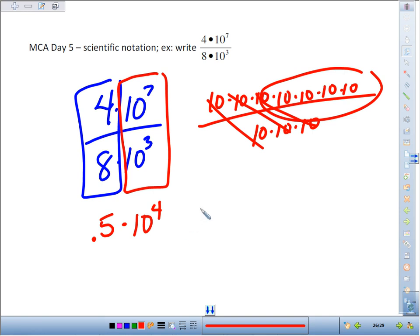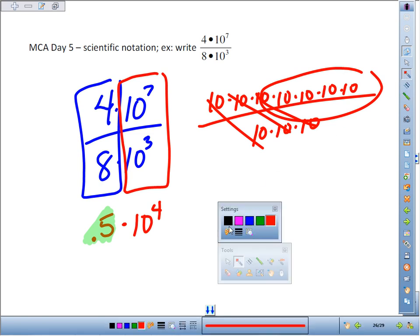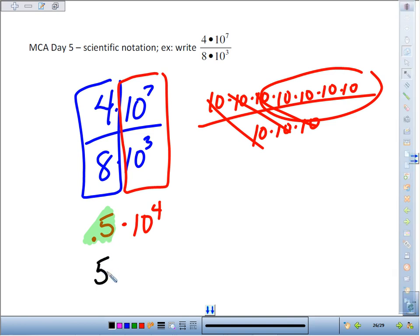Now we're close to being in scientific notation, but remember, this leading number always has to be a number between 1 and 10. So what we want to do is rewrite 0.5 in scientific notation. Scientific notation for 0.5, find the decimal between 1 and 10 that we want. So 0.5 is too small. 5 is good. But that decimal is really one spot to the left. So 0.5 in scientific notation is 5 times 10 to the negative 1st because that decimal is actually one spot to the left.